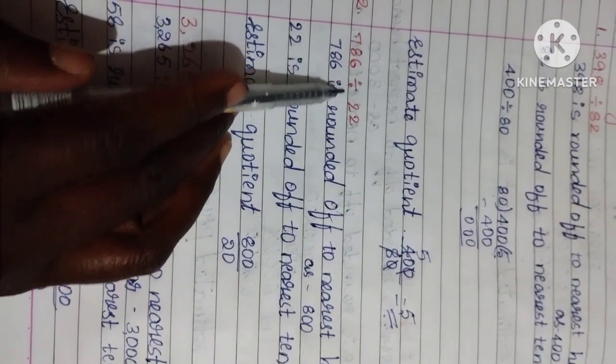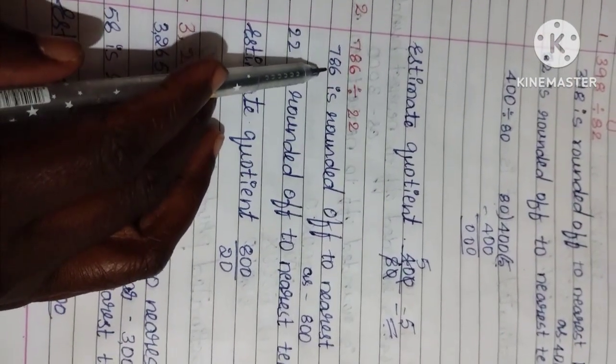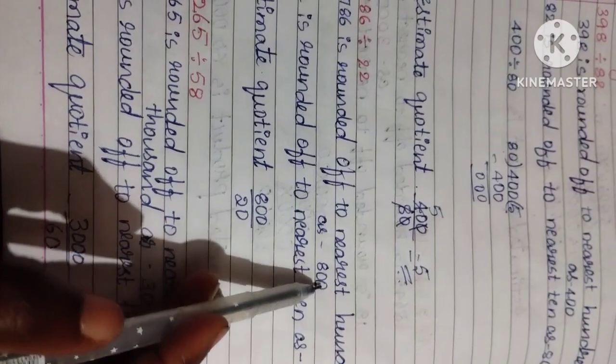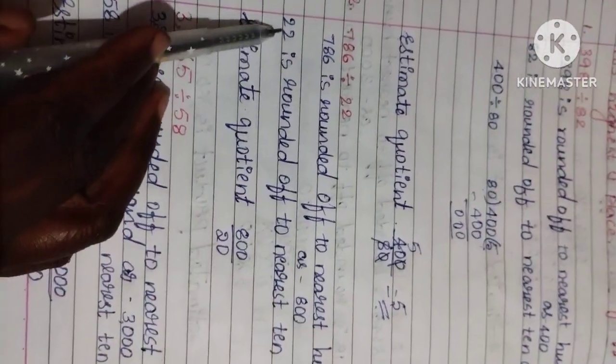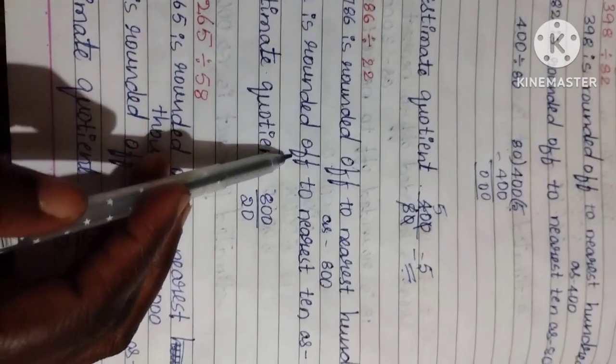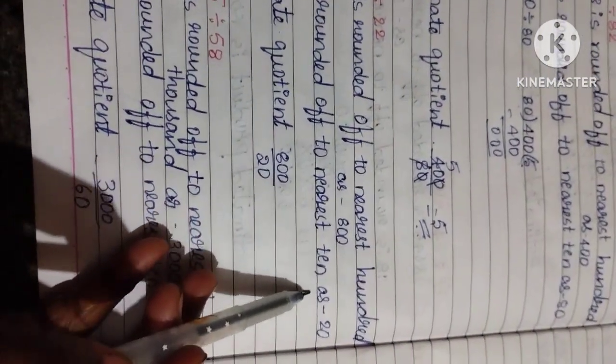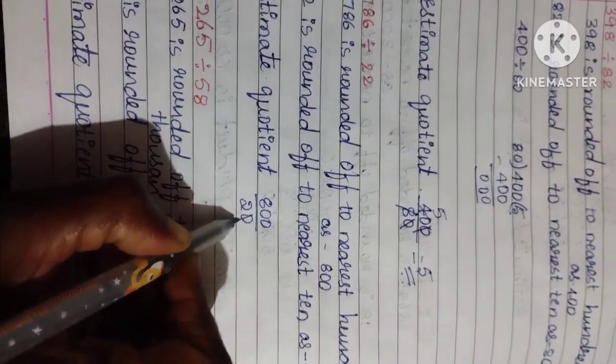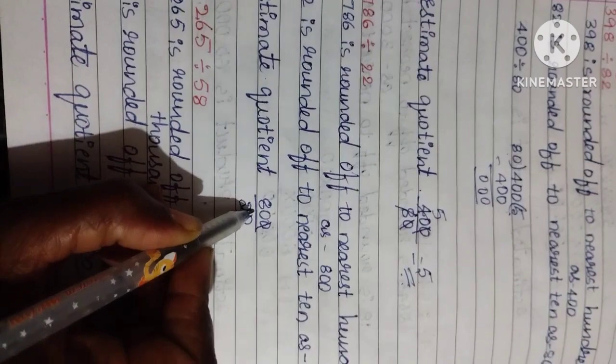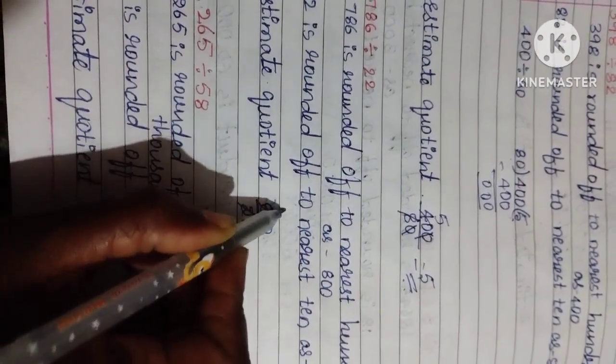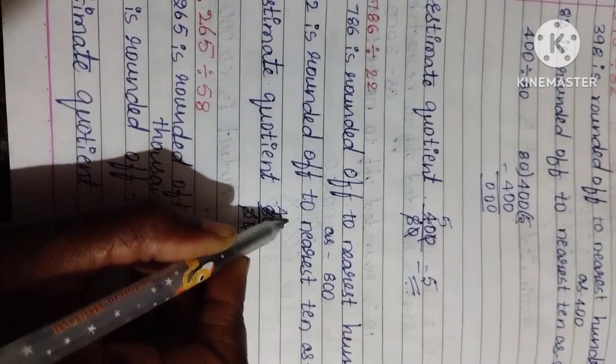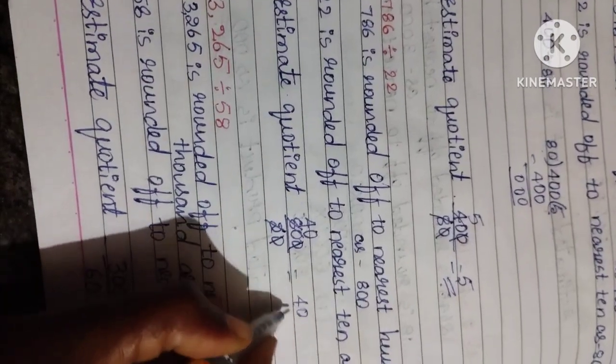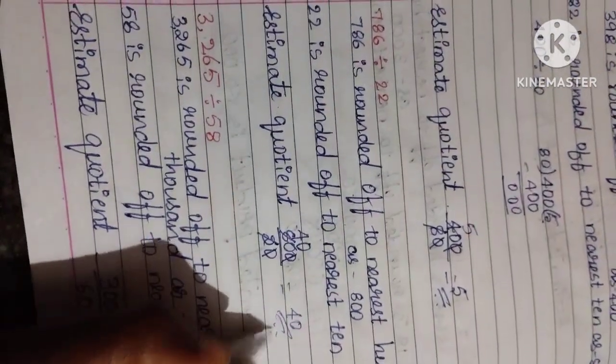786 divided by 22. 786 is rounded up to nearest 100 as 800. 22 is rounded to 20. Now estimate quotient is here. You can do division. Cancel the zeros. Now 2 forties are 80. Answer is 40. Clear this one.